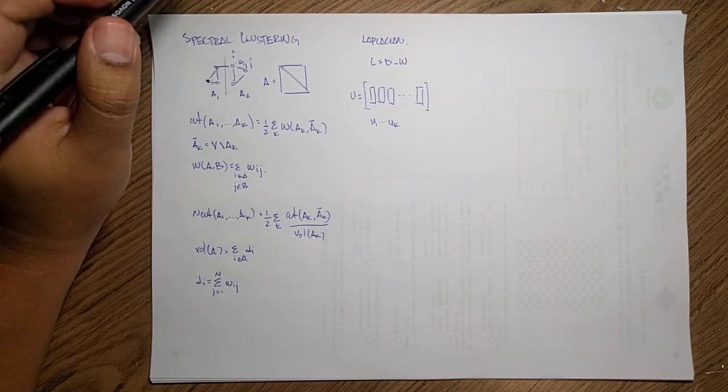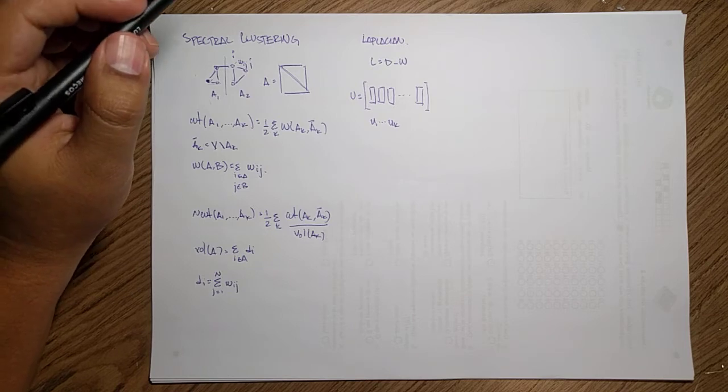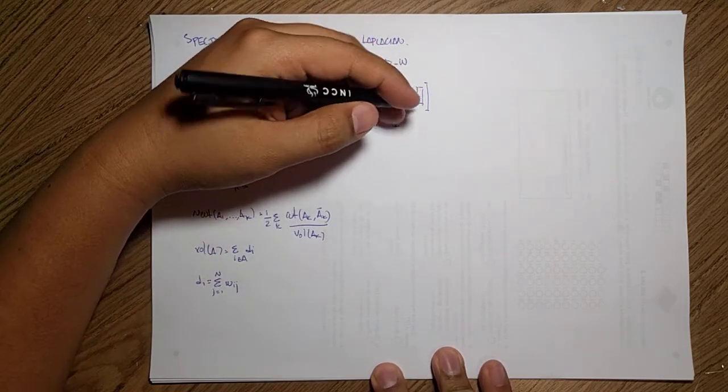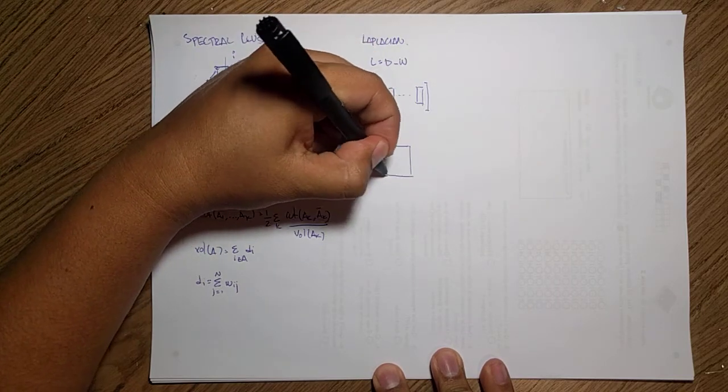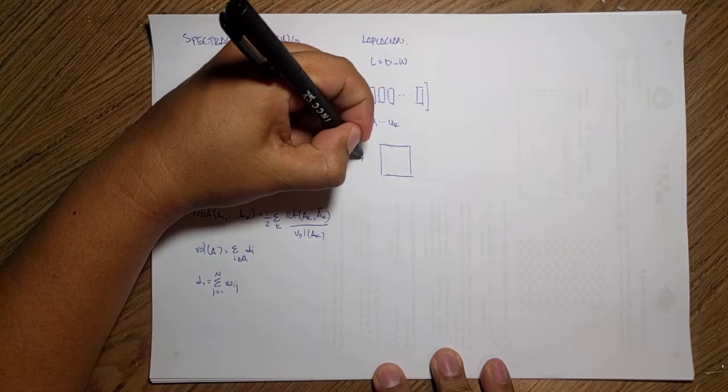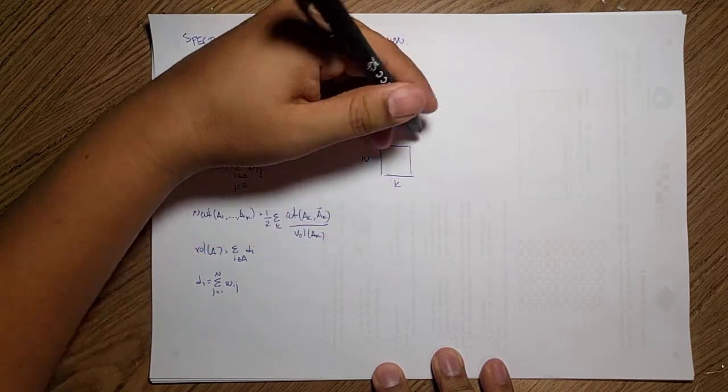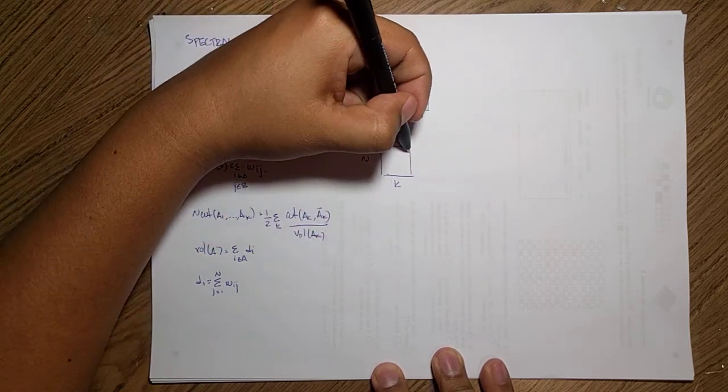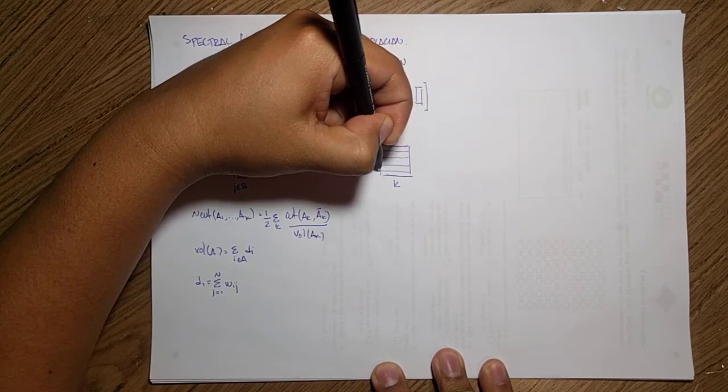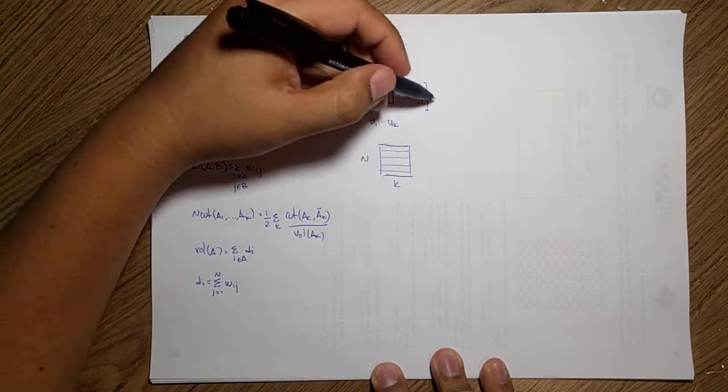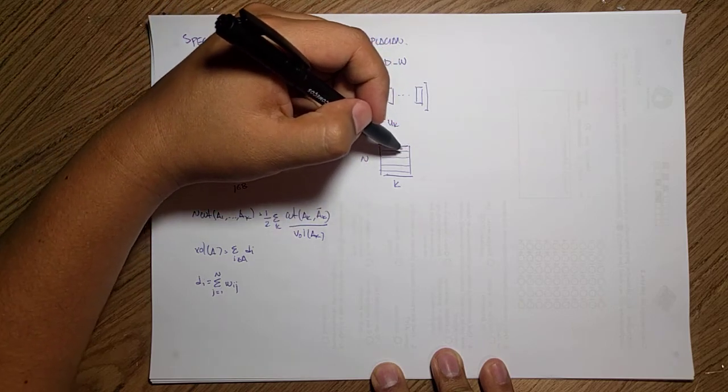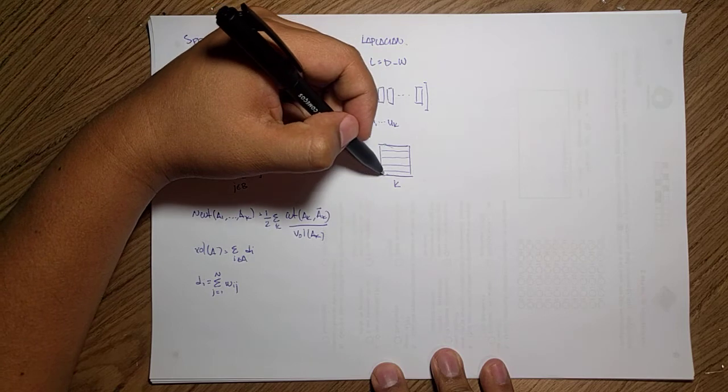Since I have this particular shape here, I have some really nice trick that I can play by taking this n by k matrix. Each of these rows will represent my data points with respect to the new base.